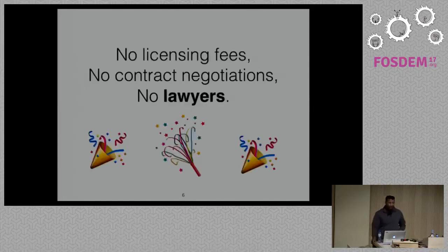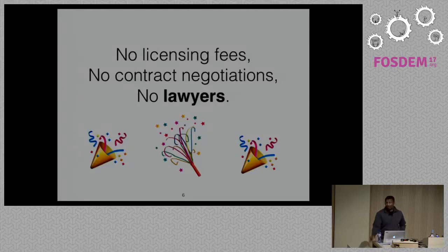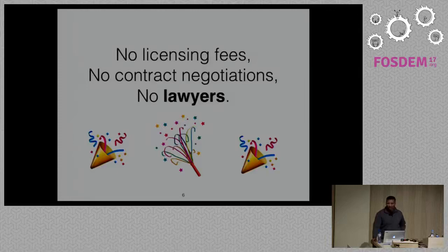The nice thing about RISC-V being an open ISA is that you don't have to pay any licensing fees. You don't have to deal with lengthy contract negotiations and you don't have to deal with lawyers, which I think is a good thing as an engineer. The licensing fees can be a problem — if you're trying to build a really low-cost IoT device, the fees can add up substantially. Contract negotiations can take six to twelve months with ARM and other vendors, which can kill you if you're a startup with VCs breathing down your neck.